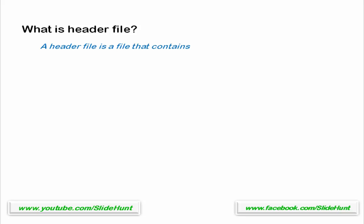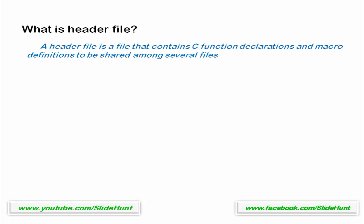First, you have to know what a header file is. A header file is a file that contains C function declarations and macro definitions to be shared among several files. The extension of this file is .h — .h indicates header file.